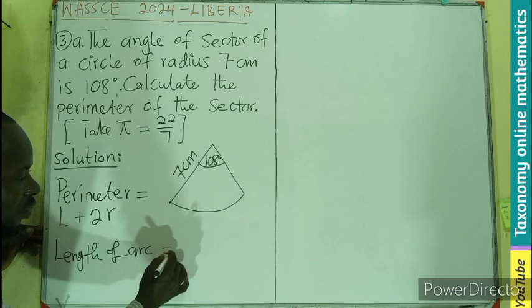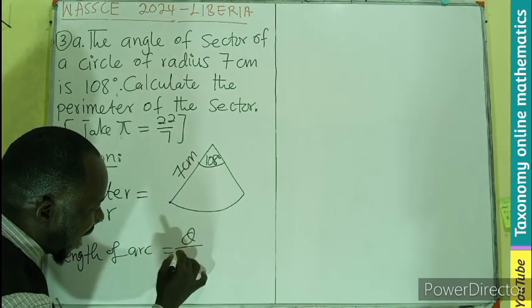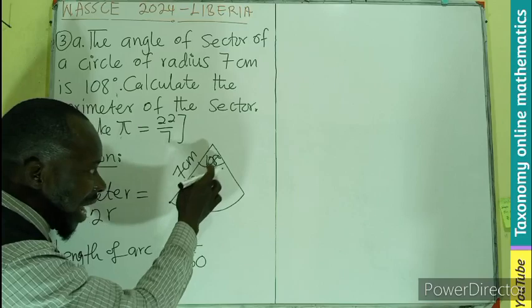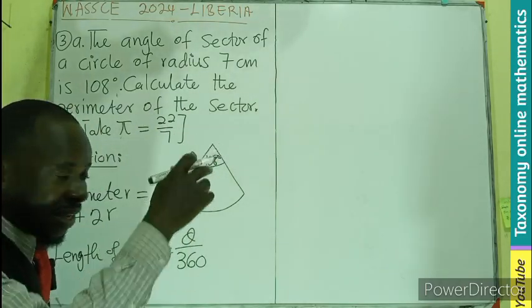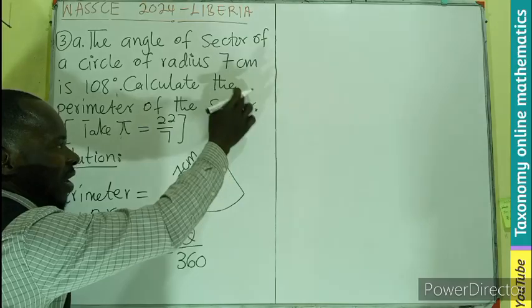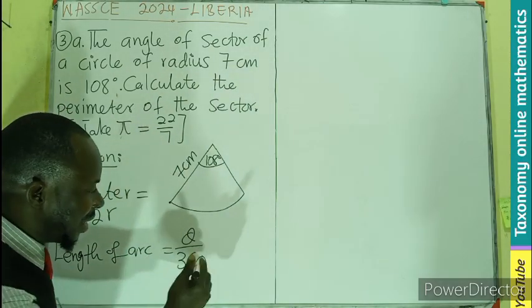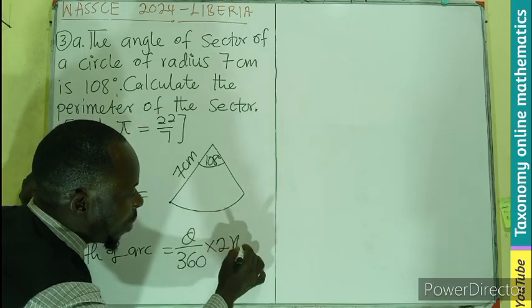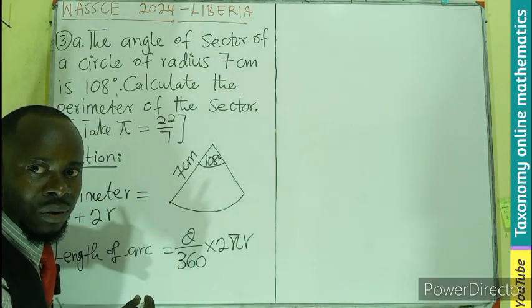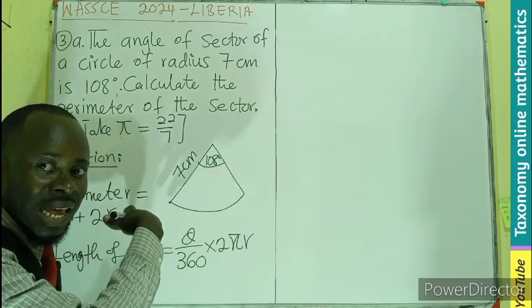The length of arc is going to be the angle sustained divided by 360. This angle is out of 360, so it's just a fraction of that times 2πr. 2πr is the circumference of this circle.